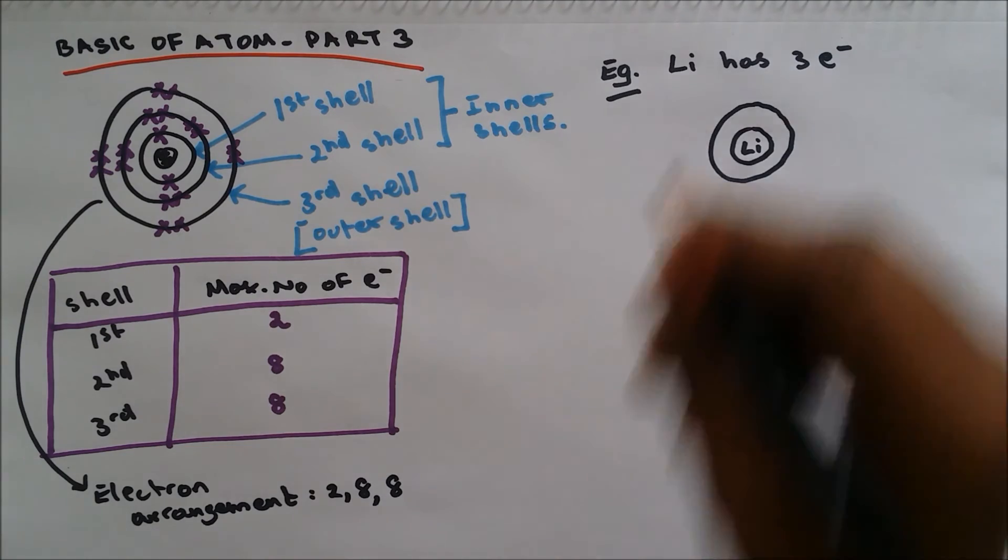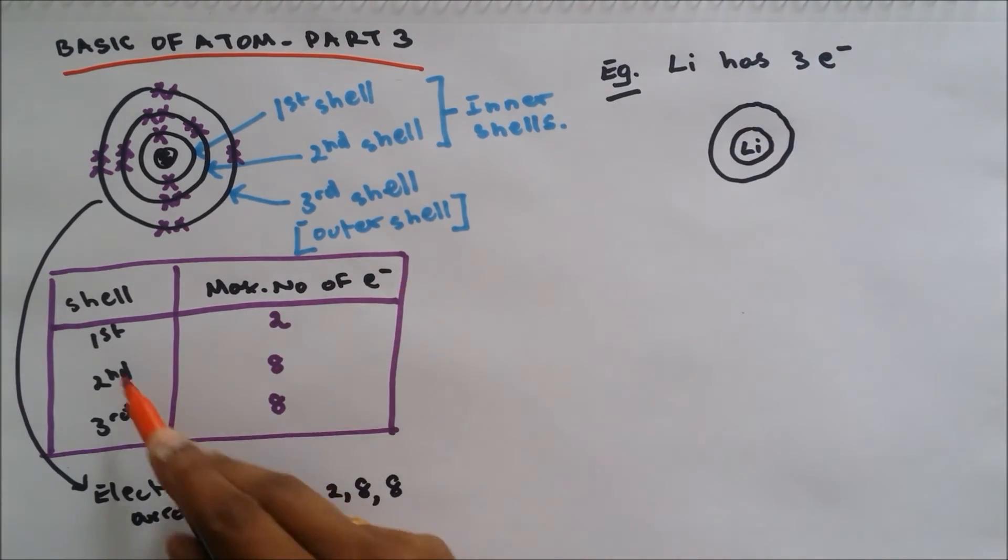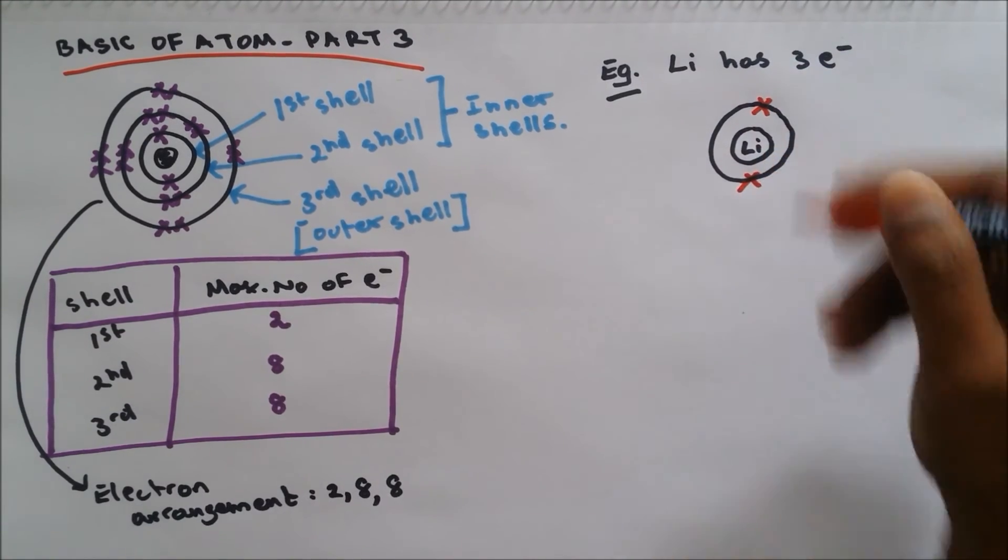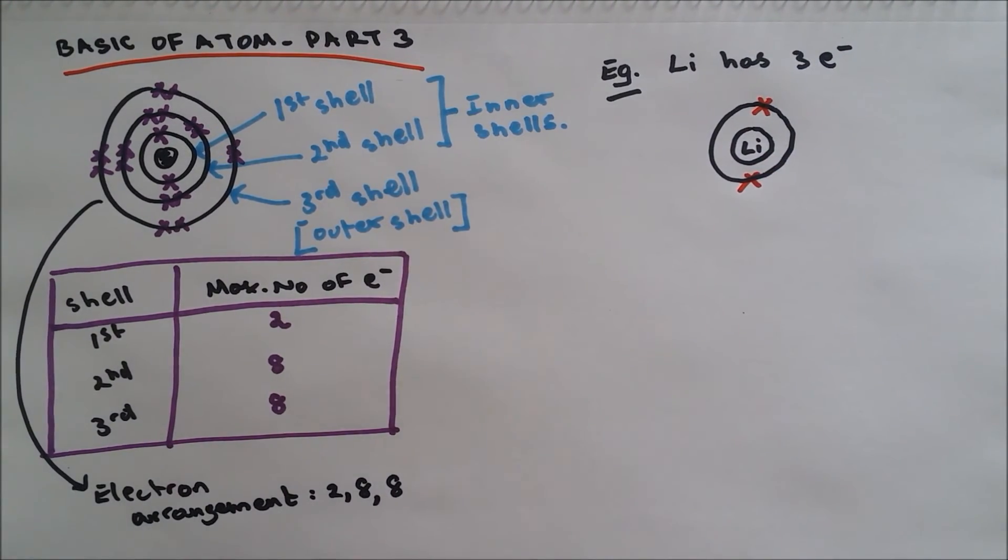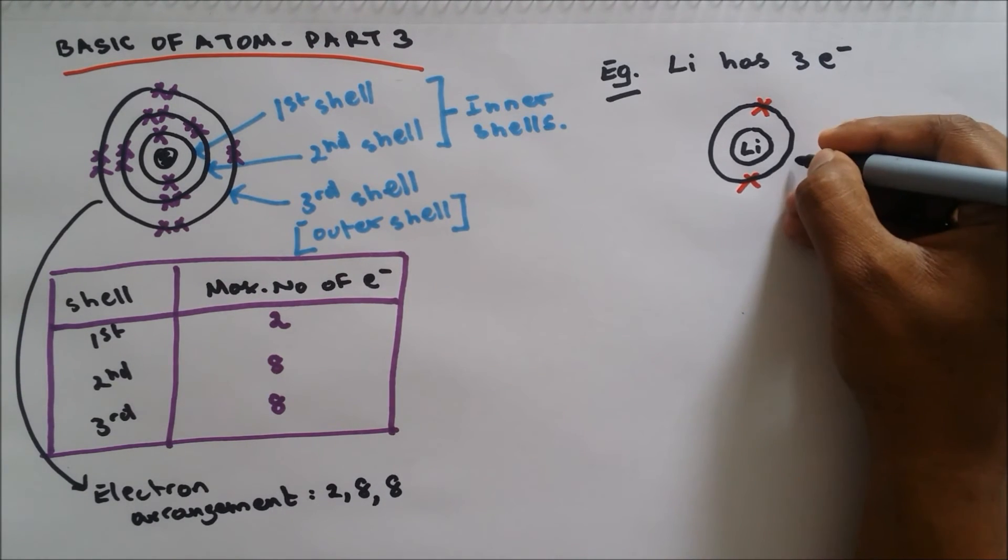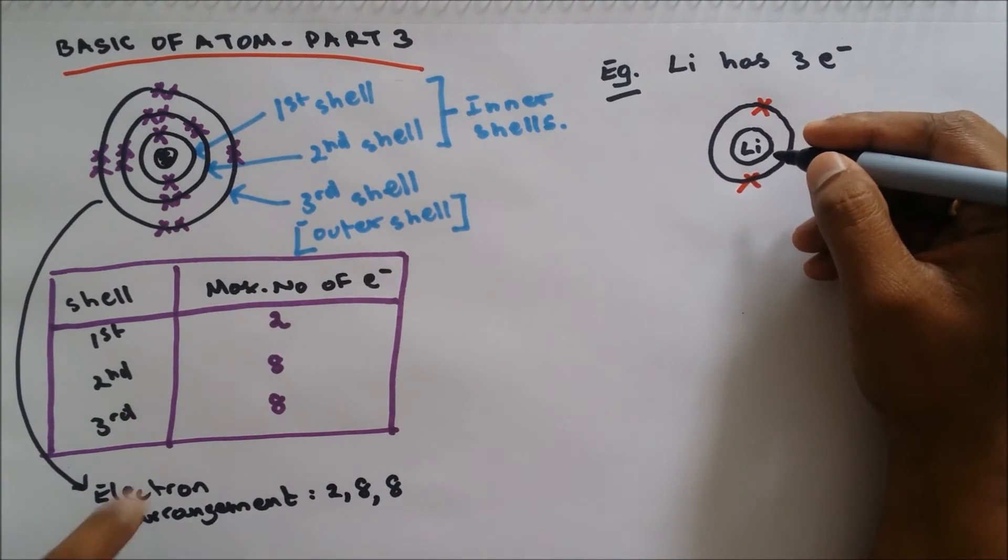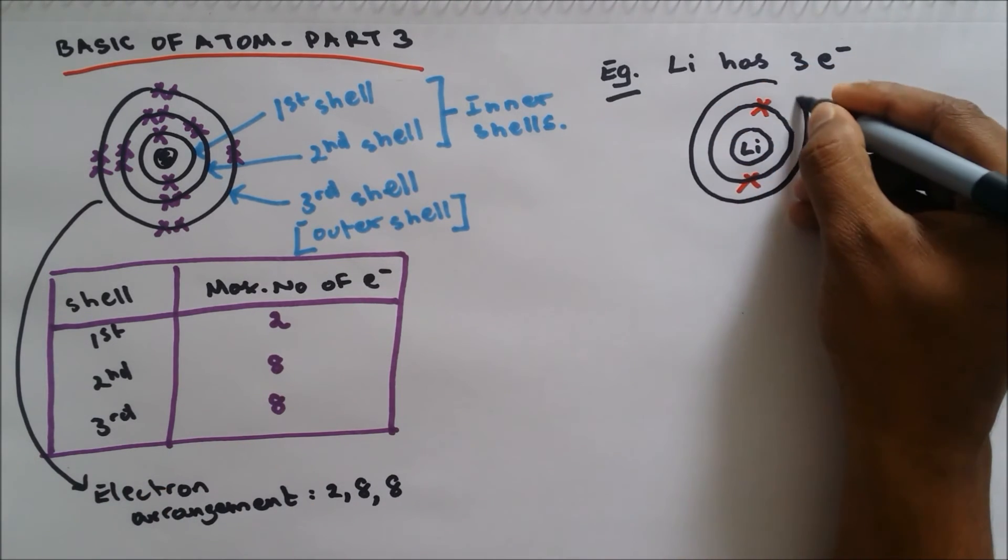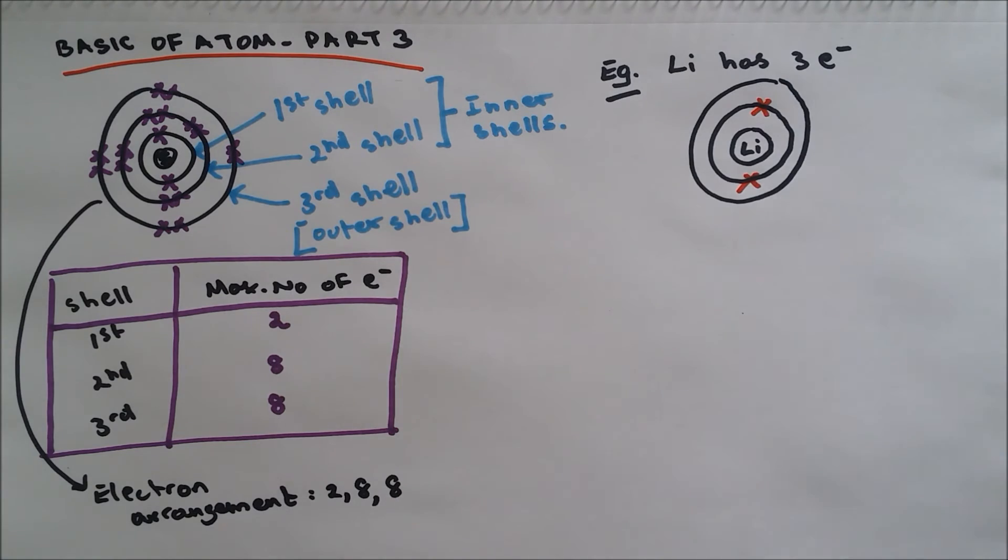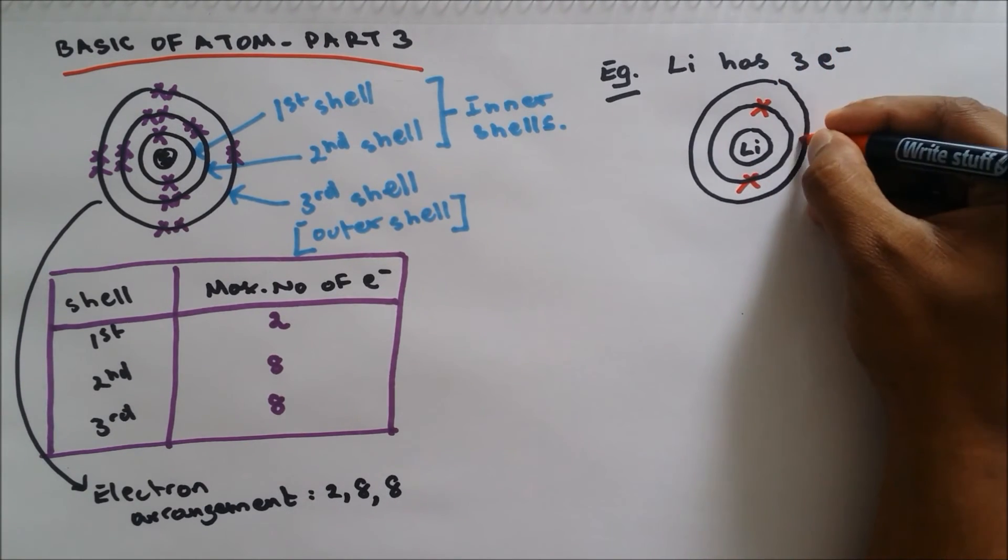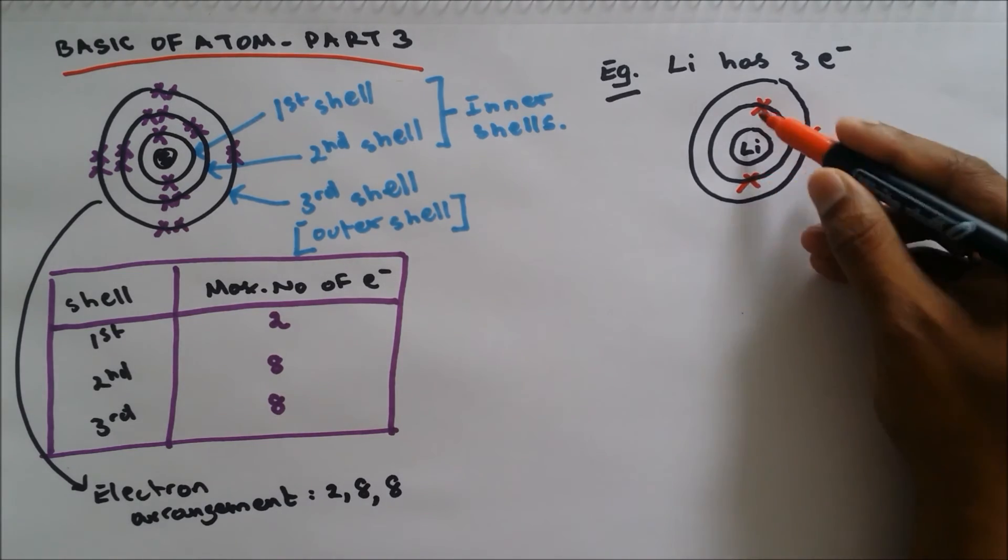How many electrons do we have on the first shell? Maximum number is only two, so we write two. But lithium has three electrons in total, so what do we do? We can't put one electron over here to make it three because the maximum number is two, so we open up another shell. And how many do we put? One, so that it brings up to three: one, two, three.